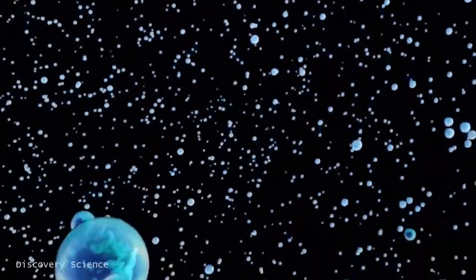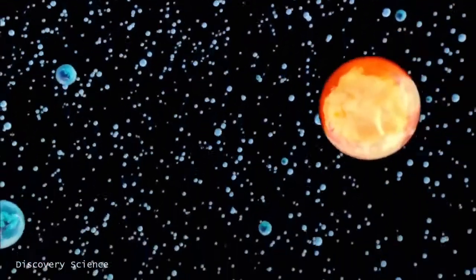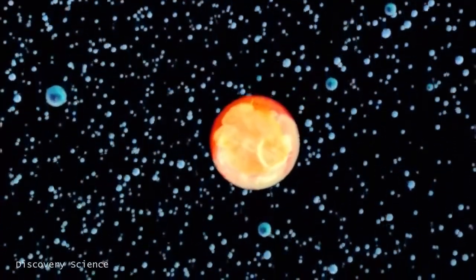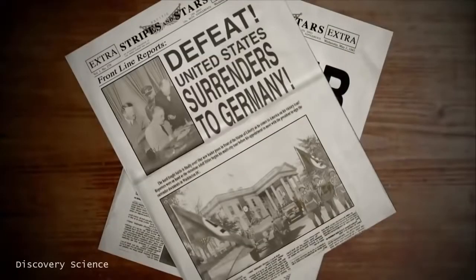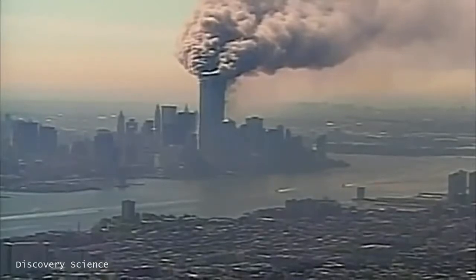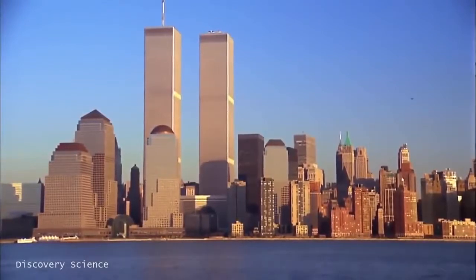This may sound far-fetched, but an impressive array of theoretical physicists believe it's the way the microscopic world works. If it's true, the implications of this startling theory go far beyond the baseball diamond. In essence, it suggests there are universes parallel to our own in which the Nazis won World War II. And in another, the American government foiled the 9-11 hijackers. So the World Trade Center still stands in Manhattan.